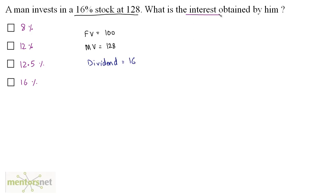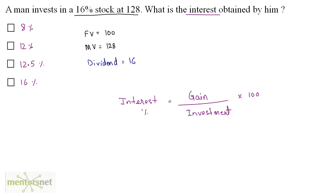What do we mean by interest? Interest is basically the amount gained upon the amount invested. To express it as a percentage, we multiply by 100. The gain here is the dividend — you earn money by investing in the stock market — so the gain is Rs 16. The investment is how much you paid to buy the shares, which is the market value, Rs 128.